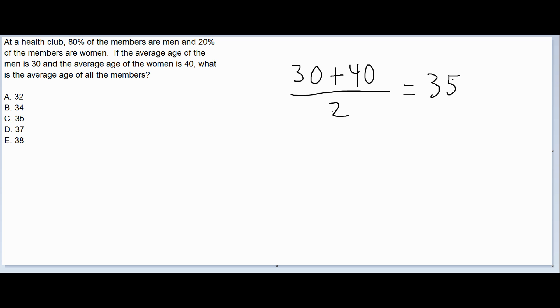So we can use the concept of a weighted average in cases like this. And what that says is that the overall average is going to be, in this case, 80% of the men's average age and 20% of the women's average age.